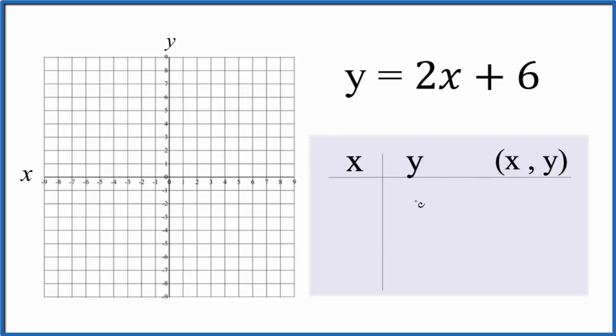Let's start with the table of values. We can choose any numbers, but I like to choose numbers that fit on the graph. When x is 1, 2 times 1 plus 6 gives us 8, so we have (1, 8). How about 0? 2 times 0 is 0, plus 6 gives us 6, so we have (0, 6).